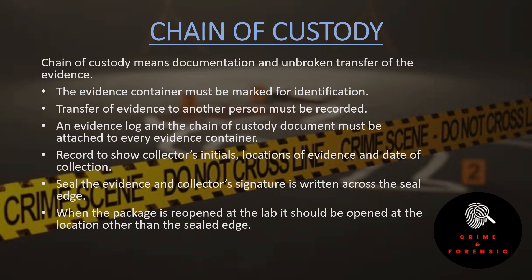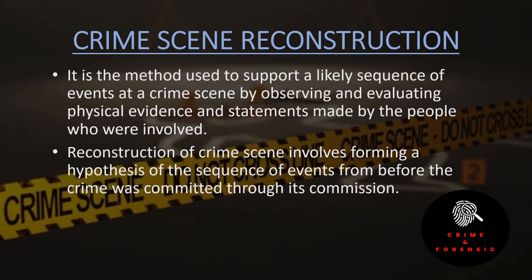Chain of custody is basically the chronological documentation or paper trail that records the sequence of custody and transportation of evidence — it means documentation and unbroken transfer of the evidence. The evidence container must be marked for identification. Transfer of evidence to another person must be recorded — which persons had the evidence must be documented. The evidence log and the chain of custody document must be attached to every evidence container, recording the collector's initials, location of evidence, and date of collection. Sealed evidence must have the collector's signature written across the sealed edge, and when the package is reopened at the lab, it should be opened at a location other than the sealed edge.